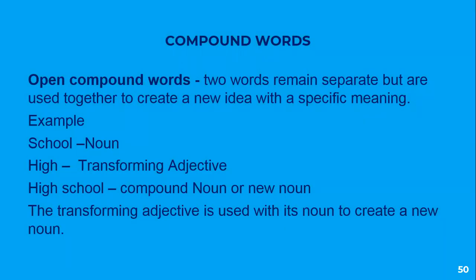Now, open compound words — the two words essentially remain separate when you see them in print, but they are used together to create a new idea and a specific meaning. For example, school is a noun and high is an adjective, but here it acts as a transforming adjective and it modifies the noun. So high school is a compound noun, a new noun. Notice that there is a space between high and school, hence it is an open compound word. Such words are called open compound words.